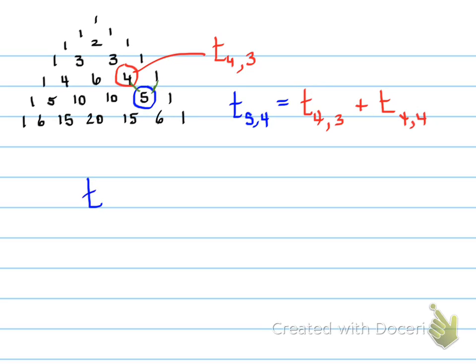So that will be that position. T_5,4 is T_4,3, plus T_4,4. All right, let's look at another example. T_6,5. How can we create T_6,5? Let's find where that is. T_6,5, so this is 0, 1, 2, 3, 4, 5. This is T_6,5, which is right here. And that equals a combination of T_5,4, plus T_5,5.